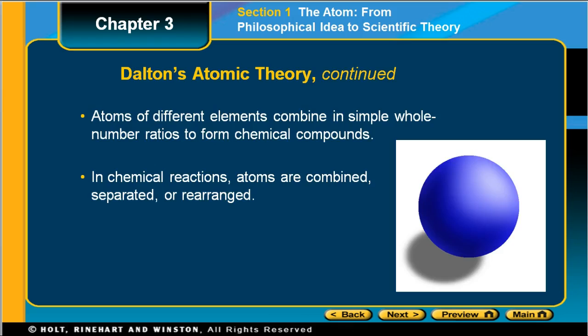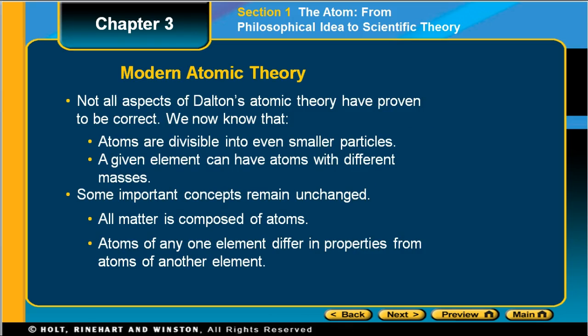The modern atomic theory has taken Dalton's atomic theory and proven not all of it is correct. We know that atoms are divisible into smaller particles and that a given element can have atoms with different masses. Some things remain unchanged: matter is composed of atoms, and atoms of any one element have different properties from another.